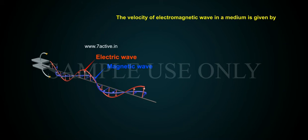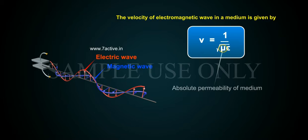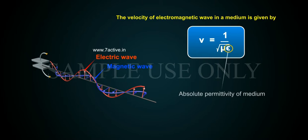The velocity of an electromagnetic wave in a medium is given by V equals 1 over the square root of mu epsilon, where mu is the absolute permeability of the medium and epsilon is the absolute permittivity of the medium.